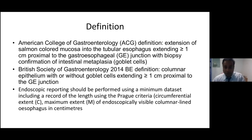The endoscopic reporting should be performed using a minimum data set which includes the record of the length using the Prague criteria. Often the request card will mention Prague criteria with C followed by a numeral number and M followed by a numeral number. C is basically the circumferential extent of the endoscopically visible columnar-lined esophagus, and M is the maximum extent — both measured in centimeters.